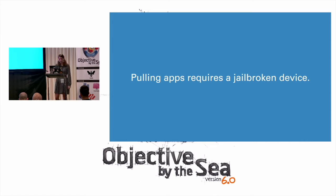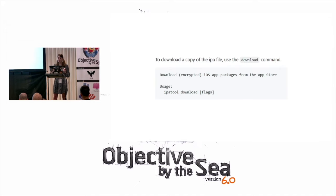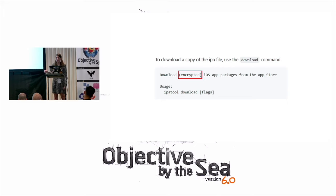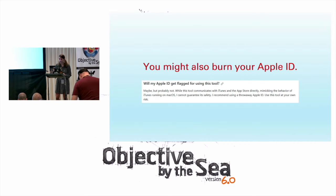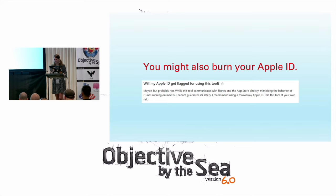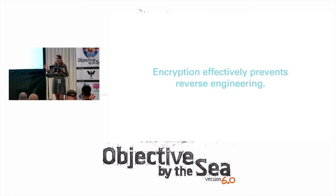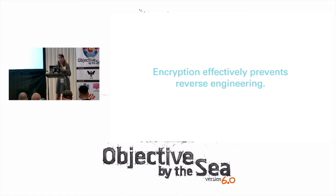You really need a jailbroken device to get to the actual binary before you can begin reverse engineering. There are a lot of tools that promise to get that IPA file for you, but if you look closely, they're actually getting you the encrypted IPA file, which does absolutely no good for static analysis. You might also burn your Apple ID in the process, so be really careful using any sketchy links that promise to get you the binary.